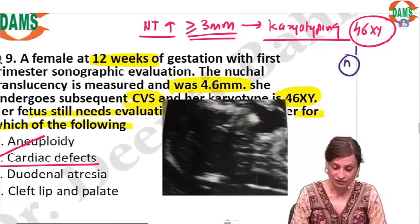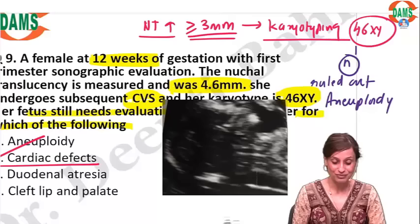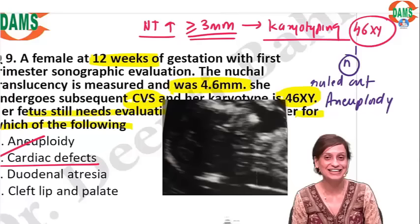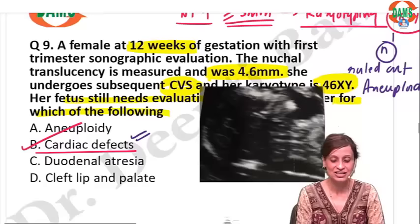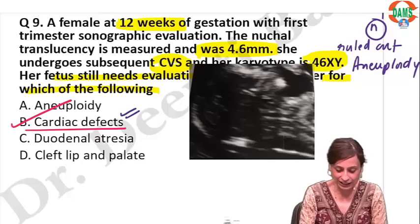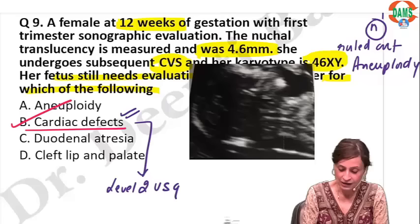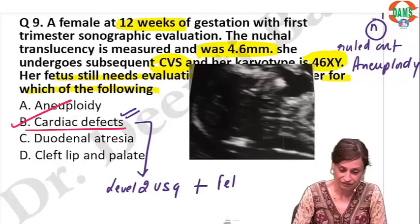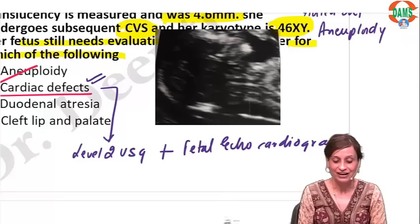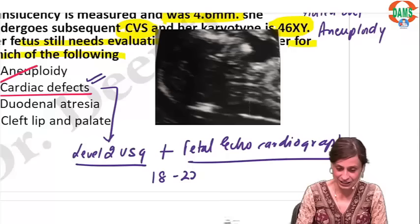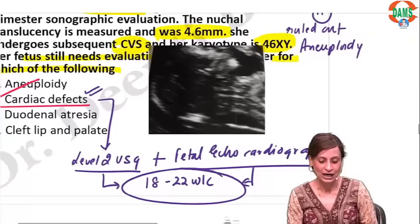We have ruled out aneuploidy. The most common cause of raised NT is aneuploidy, but the second leading cause is cardiac anomalies. So this baby needs evaluation for cardiac anomalies. We will do a level 2 ultrasound and, very importantly, a fetal echocardiography. Both are done between 18 to 22 weeks.